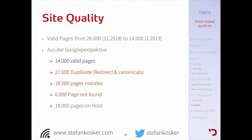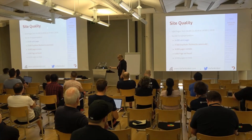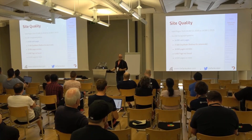You can go to Search Console which tells you every problem on every page. In January we had 14,000 valid pages, 27,000 duplicates, 18,000 pages marked as noindex — more noindexed pages than valid ones — 6,000 pages not found, and 18,000 pages Google crawled but decided not to index. Right now those numbers are much better, around 2,000 or so. Check these numbers and try to find your problems — fix them.